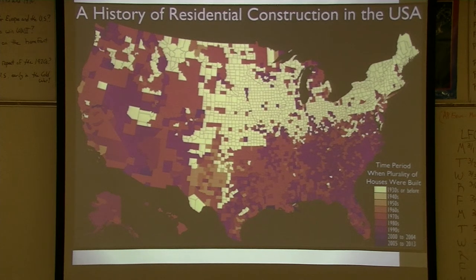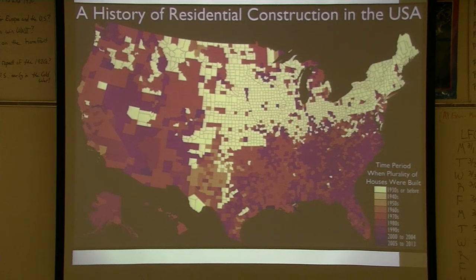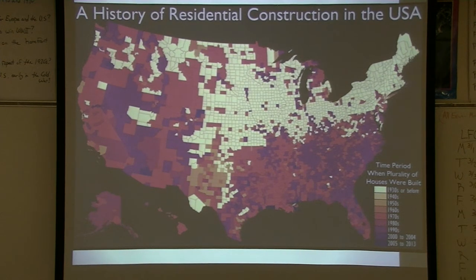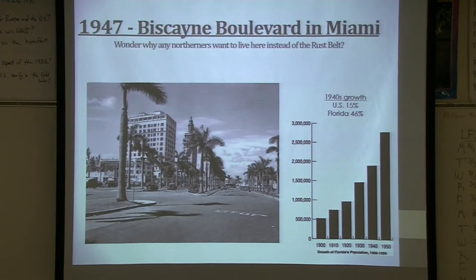I love this map — it shows when the plurality of houses were built. All that in yellow is 1930s and before. Most of the houses built in areas up north were built before 1930. Meanwhile, for our county, it's the 1990s. Some counties in Florida are after 2005. You see the South and the West — the Sun Belt — is where the greatest growth has been for recent times.